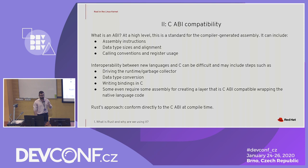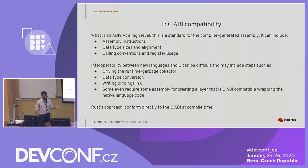So who here is familiar with what an ABI is? An ABI at a high level is essentially a standard of generated assembly that basically guarantees that when you link two things together, they will be compatible. This includes things like consistent assembly instructions, data type sizes and alignment, calling conventions, and register usage.